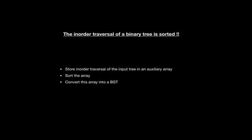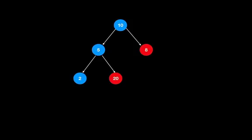The key idea here is that the inorder traversal of a binary search tree is sorted. The simplest approach to solve this problem would be to store the inorder traversal of the input tree in an auxiliary array, sort the array, and convert this array into a binary search tree again. Let us understand this with the help of an example.